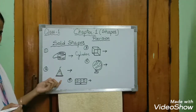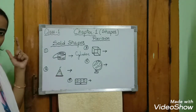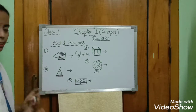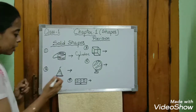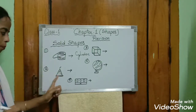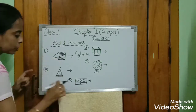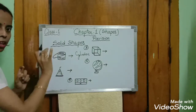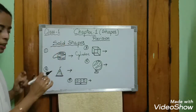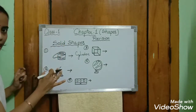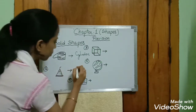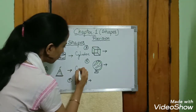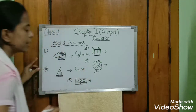The next object is a cap — a party cap, or we can call it a clown hat. What is the shape of this object? It is related to the solid shape cone. So here we write: cone.